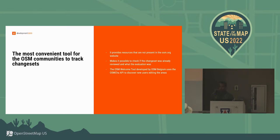We also have a great use case of our API: the OSM Welcome Tool, developed by OSM Belgium. It's a tool to discover new users. It can be used not only in Belgium but in any part of the world. You subscribe and register a region you want to monitor, discover new users in that area, and it allows you to send a message to each user.